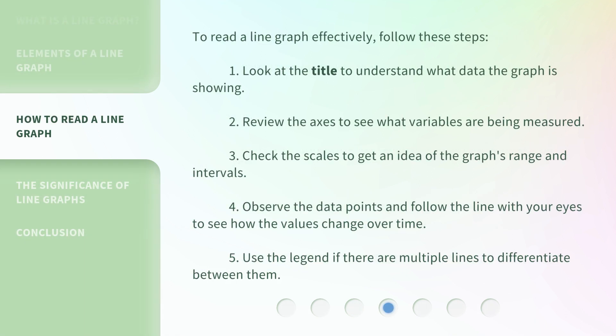To read a line graph effectively, follow these steps: 1. Look at the title to understand what data the graph is showing. 2. Review the axes to see what variables are being measured. 3. Check the scales to get an idea of the graph's range and intervals. 4. Observe the data points and follow the line with your eyes to see how the values change over time. 5. Use the legend if there are multiple lines to differentiate between them.